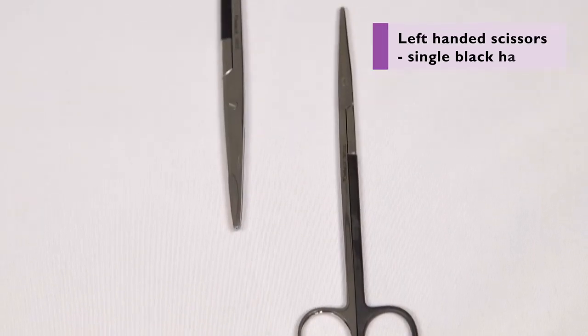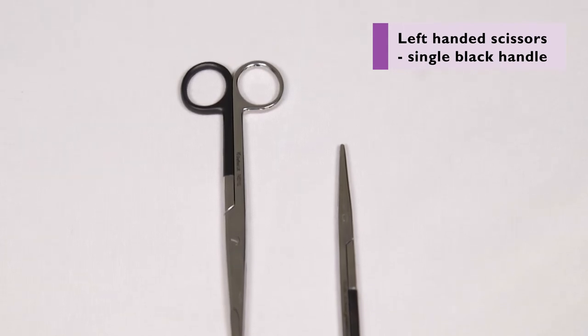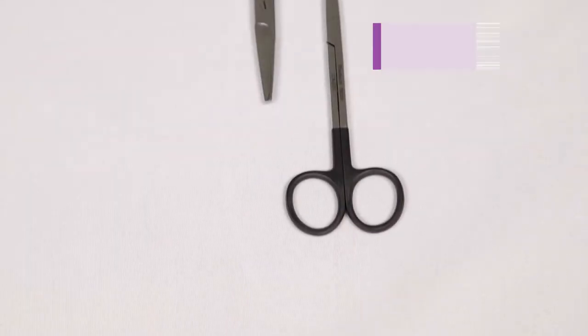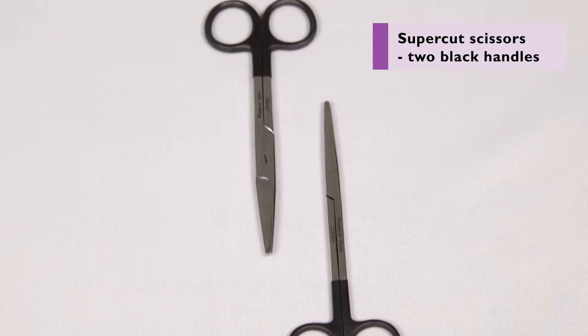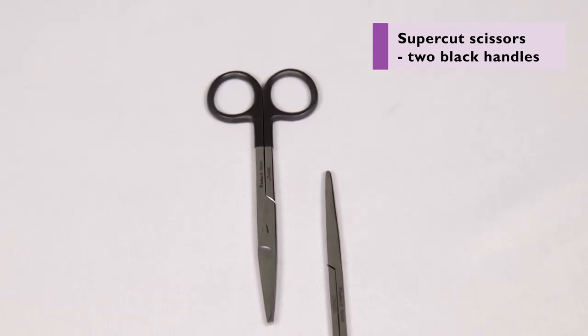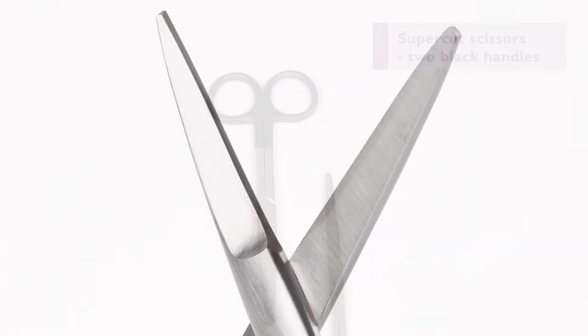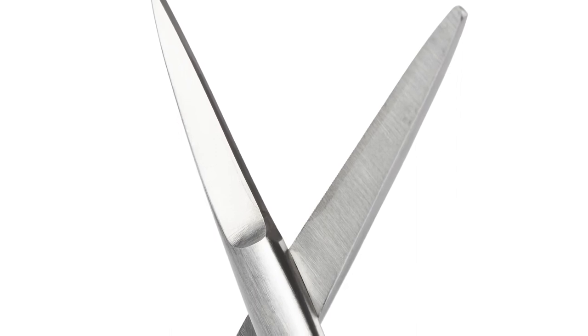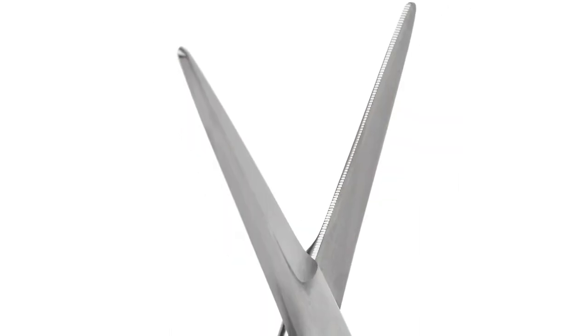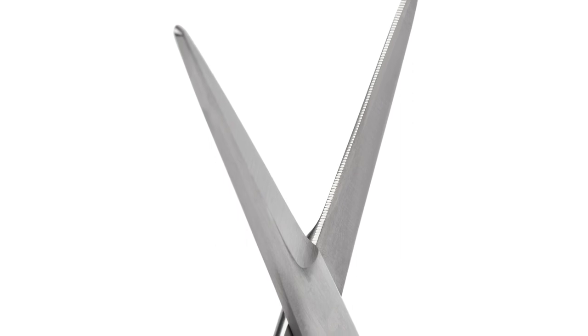Instruments made specifically for left-handed surgeons have a single black handle. Two black handles indicate supercut blades. Designed to enhance the cutting performance, these scissors have a highly sharpened upper blade combined with a lower blade that has micro serrations along the edge.